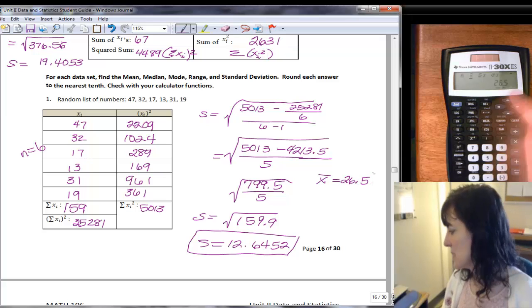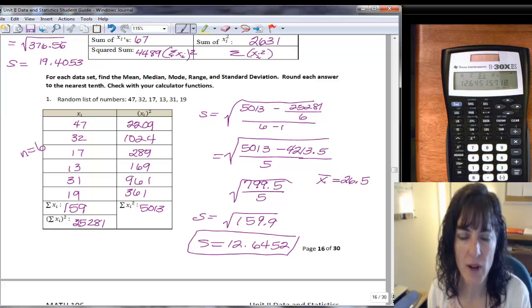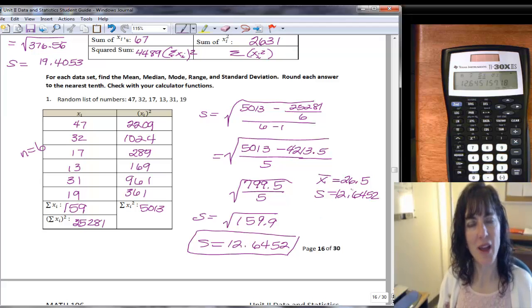And then the standard deviation, and I get 12.6451, and the 5 is following, so my s is going to be 12.6451. And you can see that those measures match, so by hand and on the calculator.